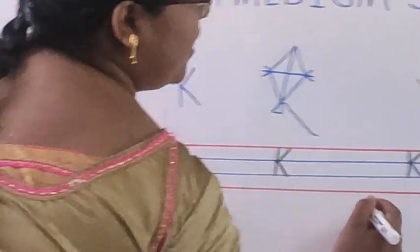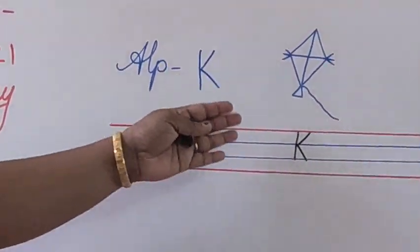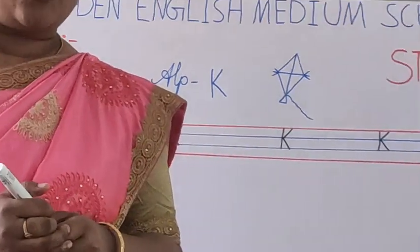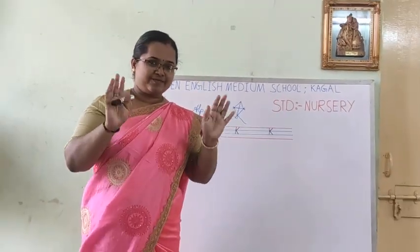Now you understood how to write alphabet K in these four lines. Now if you take practice at home. Bye-bye.